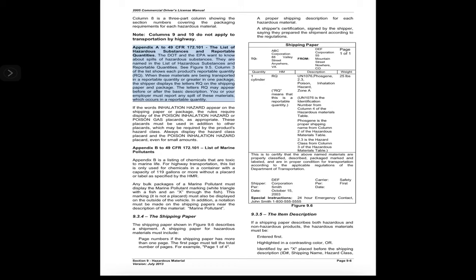Column 3 of that list shows each product's reportable quantity (RQ). When these materials are transported in a reportable quantity or greater in one package, the shipper displays the letters RQ on the shipping paper and package. You or your employer must report any spill of these materials in a reportable quantity. If the words 'inhalation hazard' appear on the shipping paper or package, the rules require display of the poison inhalation hazard or poison gas placards in addition to other required placards.